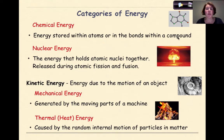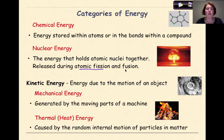The final type of potential energy is nuclear energy — we're going to talk about this in a lot more detail. This is the energy that holds atomic nuclei together, and it will be released during atomic fission and fusion. We'll cover those two concepts in detail. So we have potential energy as stored energy, and then we have kinetic energy, which is defined as energy due to the motion of an object.